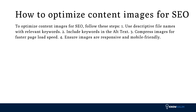To optimize content images for SEO, follow these steps: 1. Use descriptive file names with relevant keywords. 2. Include keywords in the alt text. 3. Compress images for faster page load speed. 4. Ensure images are responsive and mobile-friendly.